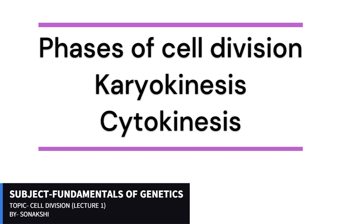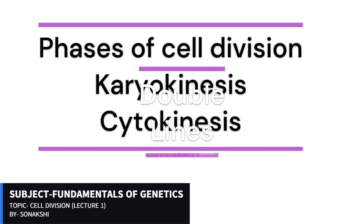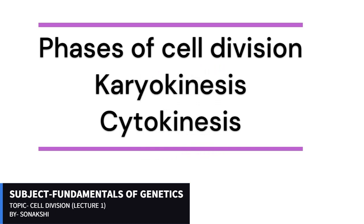There are two key processes: the first is karyokinesis and the second is cytokinesis. Karyokinesis is the division of the nucleus and cytokinesis is the division of the cytoplasm. Together, these events make up the cell cycle.